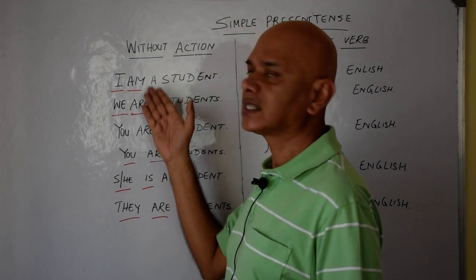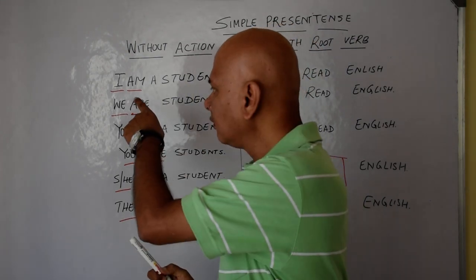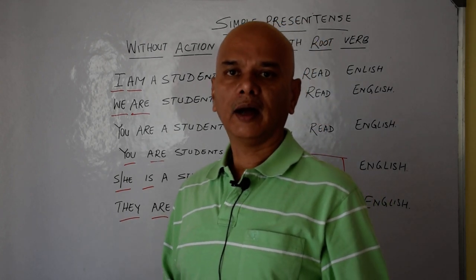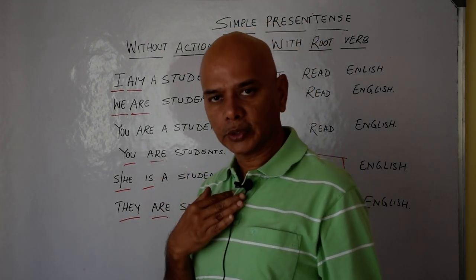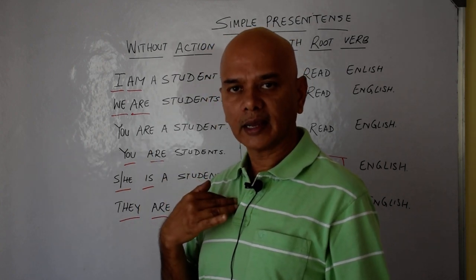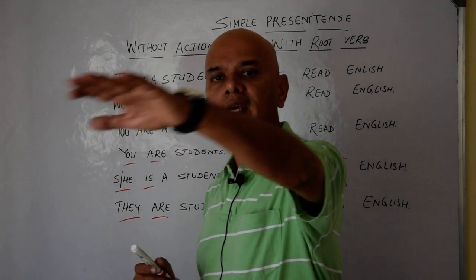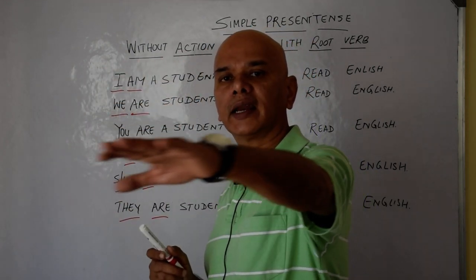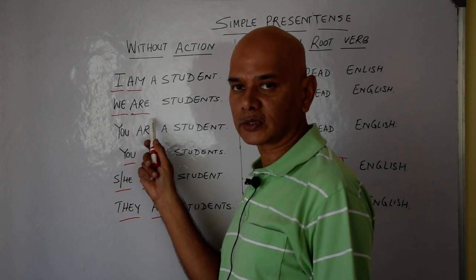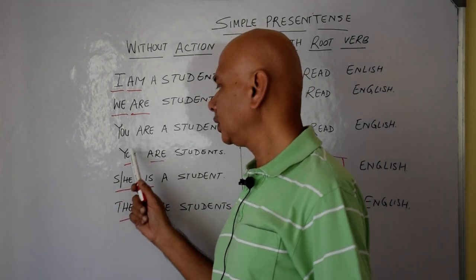When there is no action, we use am, is, are. First person singular: I am a student, I am a teacher, I am a doctor, I am an employee. First person plural: we are students, we are Indians. Second person singular: you are a student.